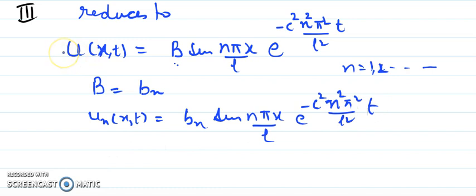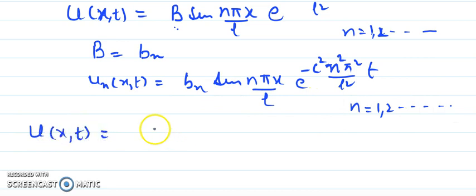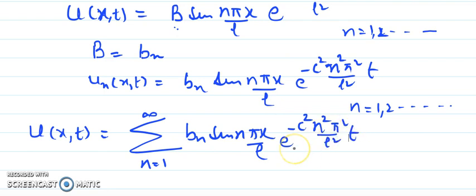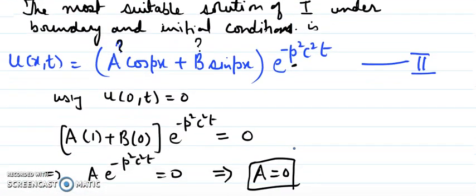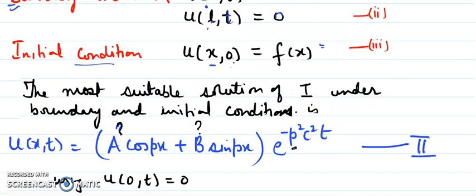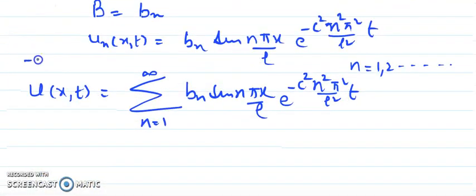For a linear equation, if we have infinite solutions, the general solution is the superposition (sum) of all these solutions. So the general solution is u(x,t) = Σ (n=1 to ∞) bₙ · sin(nπx/l) · e^(−c²n²π²t/l²). We still have one condition yet to be applied — the initial condition — which is equation number 4.